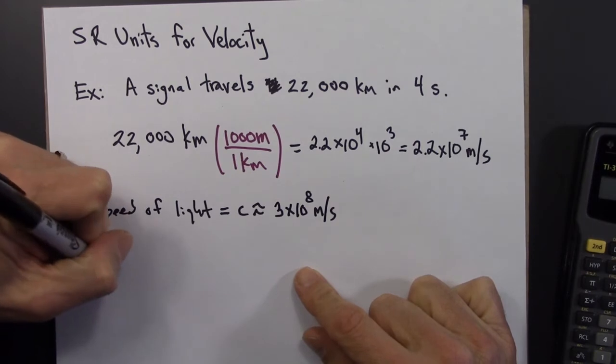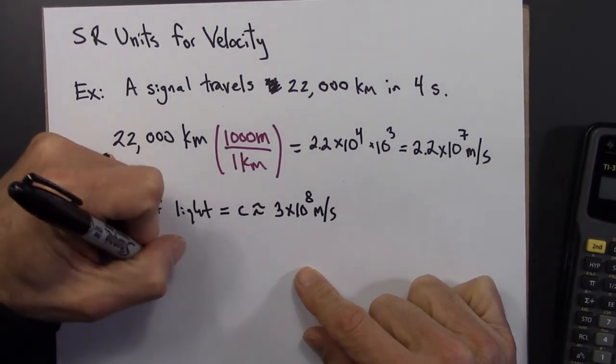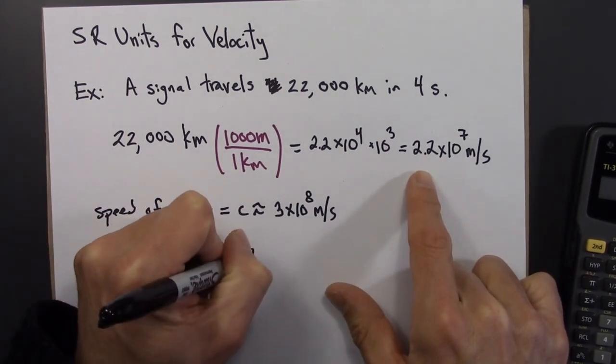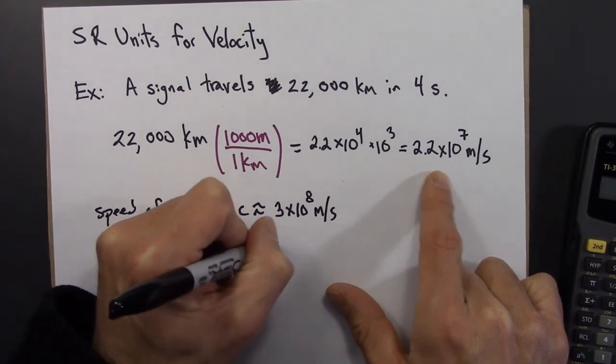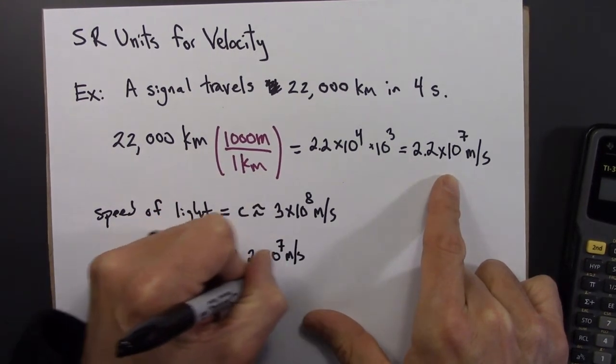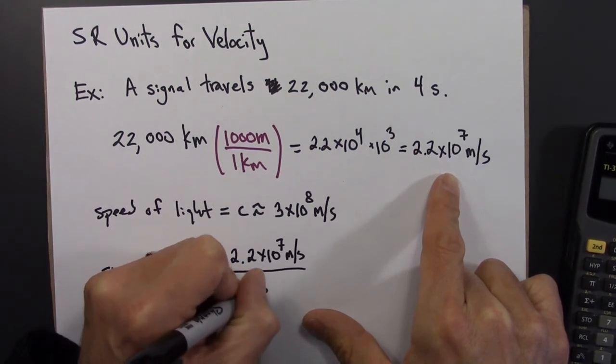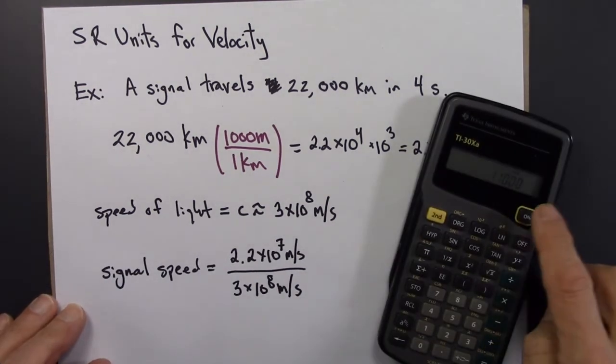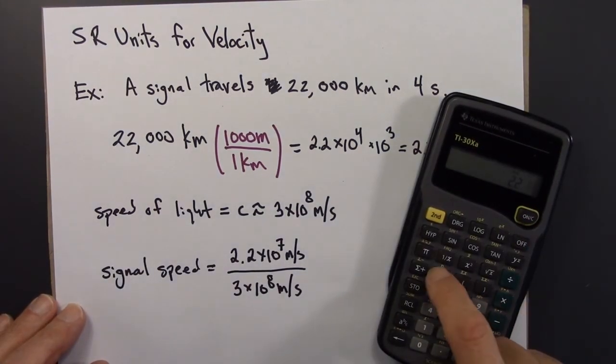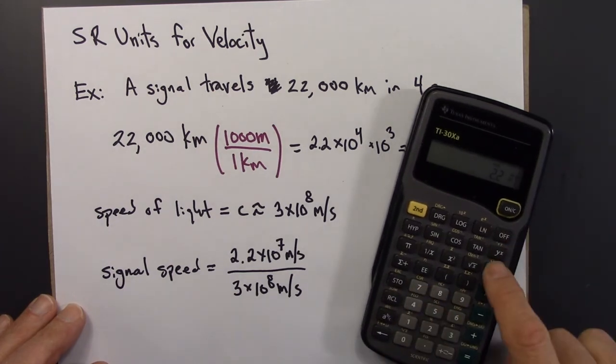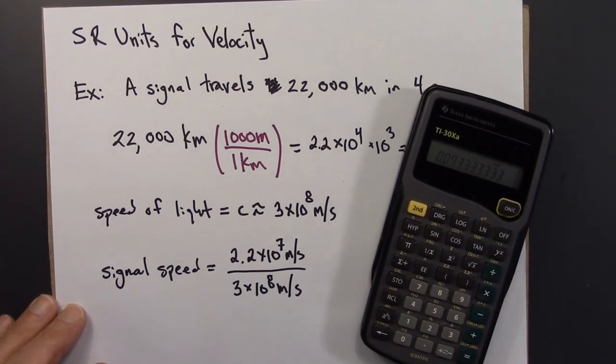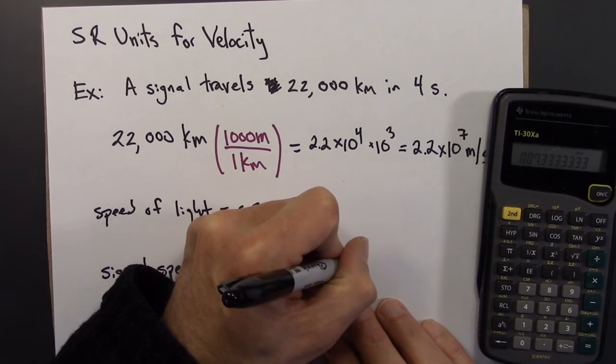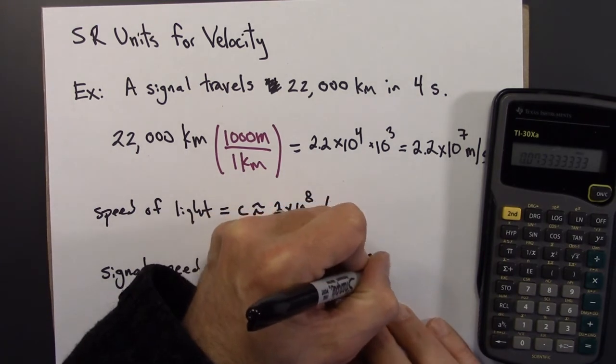So then I'm going to say that the signal speed is 2.2 times 10 to the 7 meters per second over 3 times 10 to the 8th meters per second. So let me do that out and then I'll talk about what it means. 2.2 E7 divided by 3 E8 is 0.073.